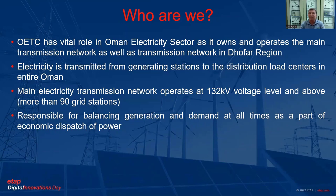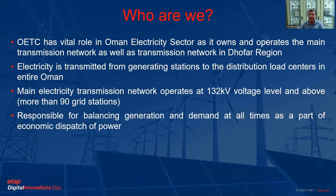Our company name is Oman Electricity Transmission Company, which is the main transmission company in Oman. In Oman there are two separate networks — one in the north and another in the south. In the northern region we are transmitting power from generating stations to distribution load centers all over Oman through an over-132 kV voltage level network, which has a backbone of 400 kV and 220 kV. We are also responsible for balancing generation and demand through economic dispatch of power.